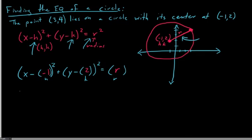You'll notice if I rewrite this, we have x minus a negative one, or in other words, x plus one squared, plus y minus a positive two, or just y minus two squared, equal to r squared. The center was at (-1,2), but in the equation it says positive one and negative two. That's the way it should be, so don't sweat it.